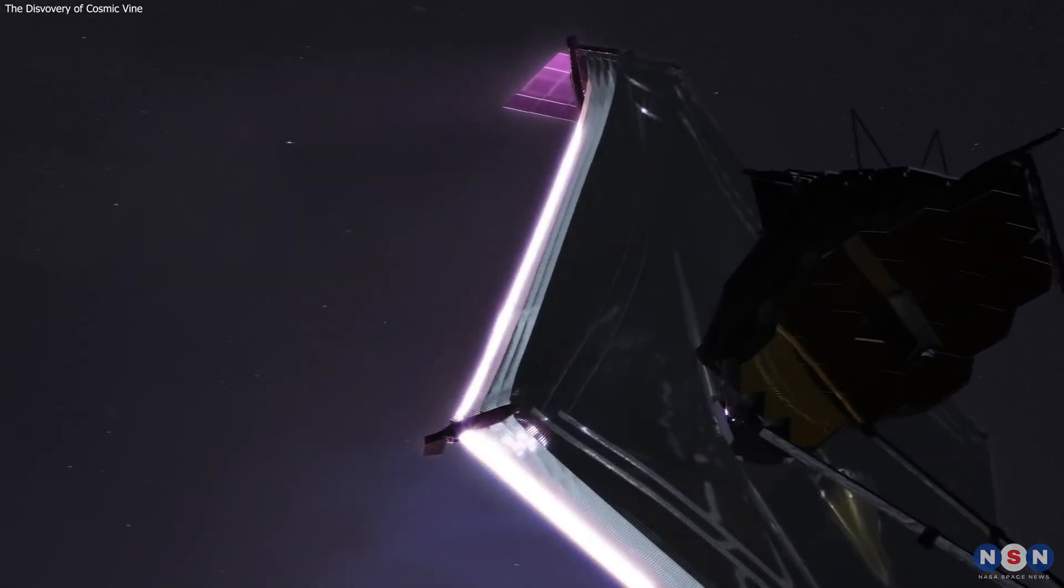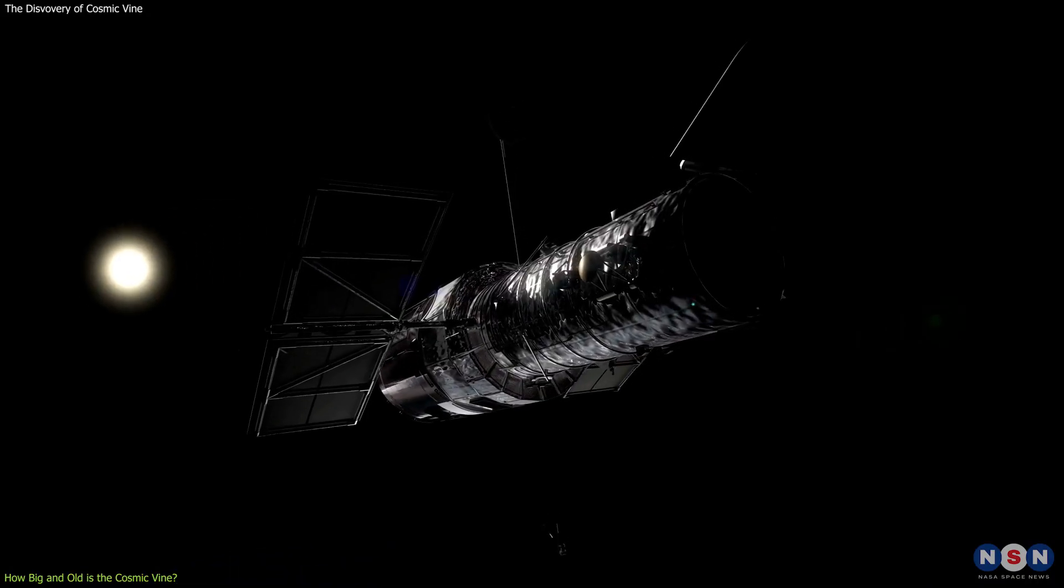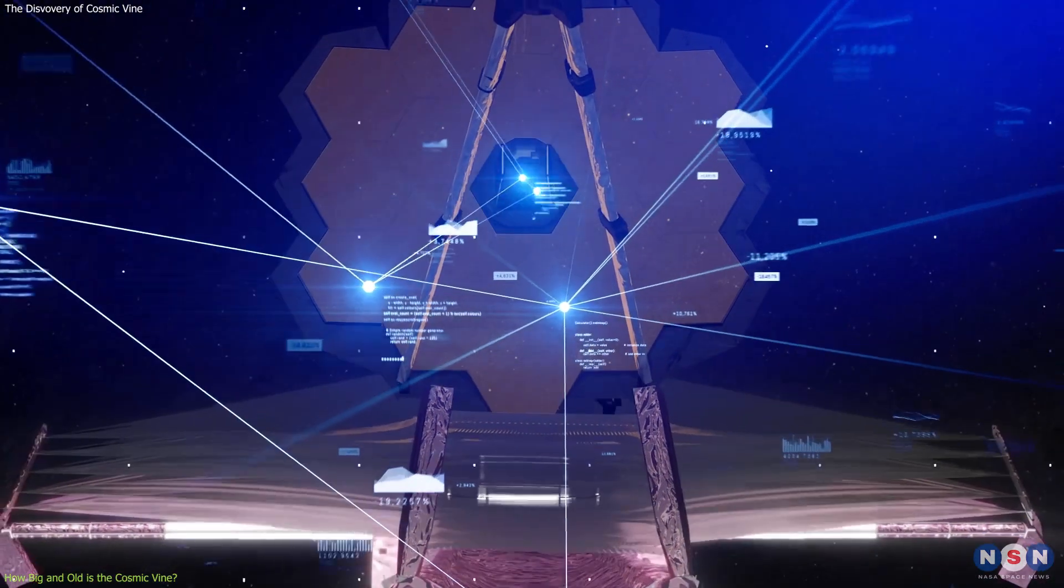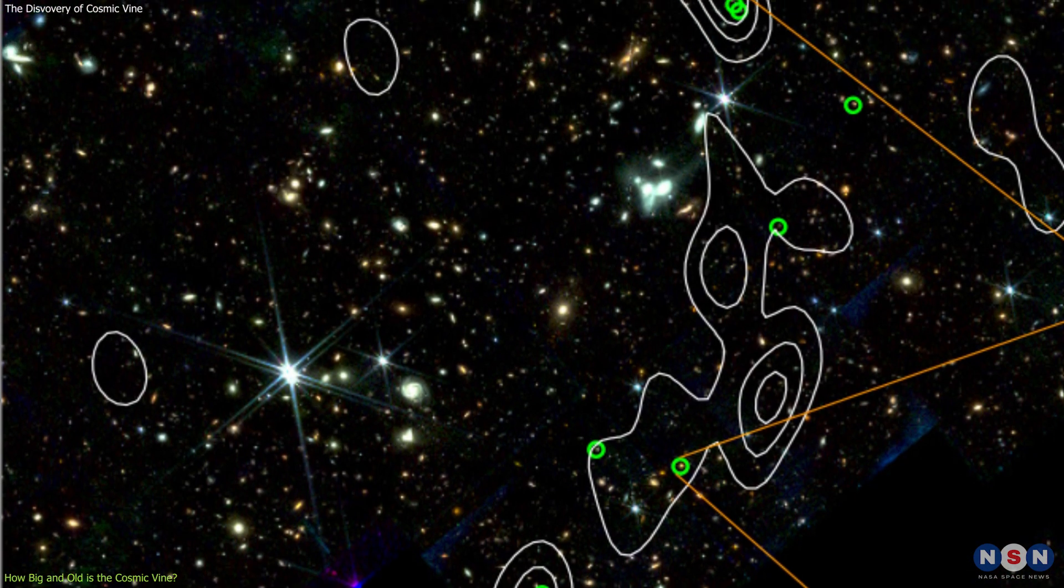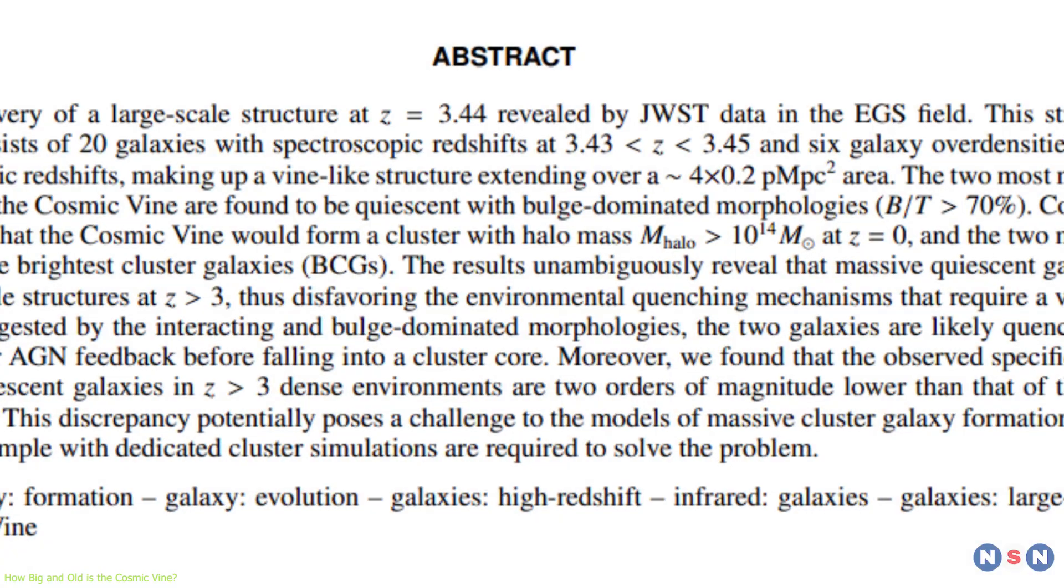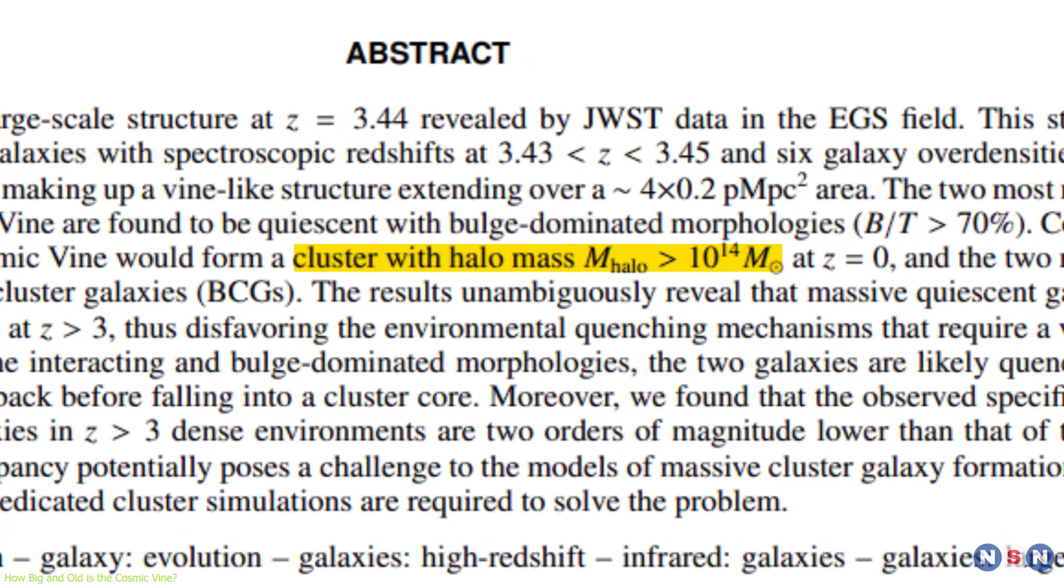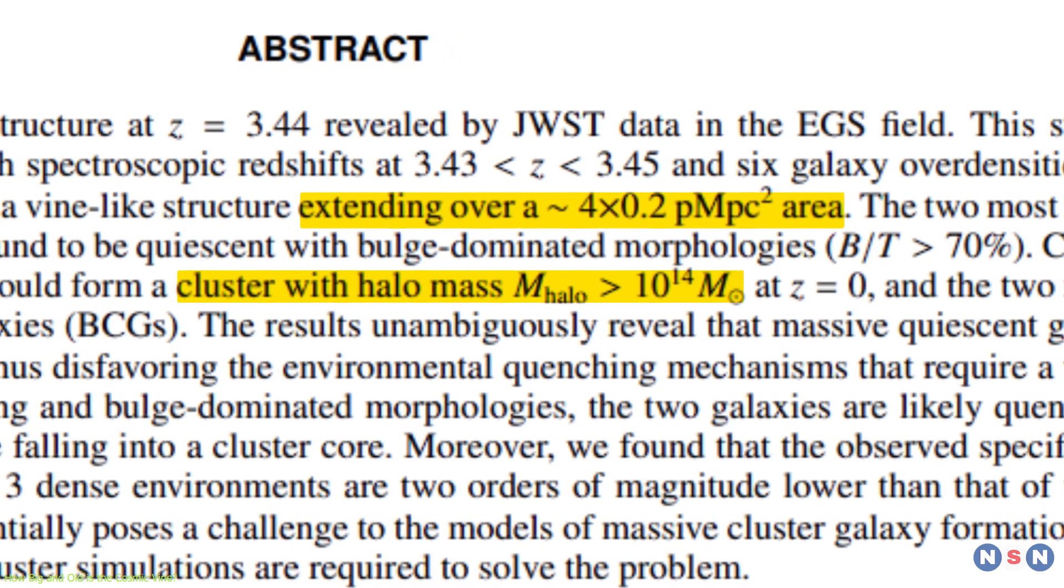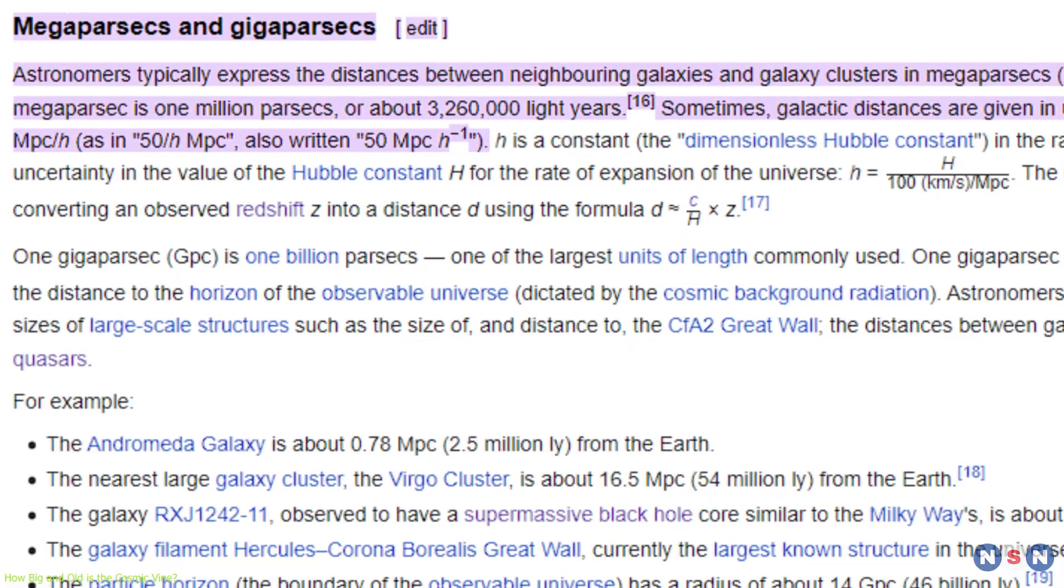The Cosmic Vine was discovered by the James Webb Space Telescope, the successor of the Hubble Space Telescope, which has been operating since 1990. By using the James Webb data, the astronomers were able to detect and measure the Cosmic Vine in unprecedented detail. They found that the Cosmic Vine has a total mass of about 10 to the 14 solar masses and extends over about 4 by 0.2 physical megaparsecs. A physical megaparsec is a unit of length that corresponds to about 3.26 million light years.